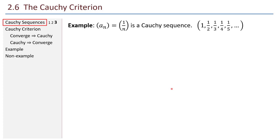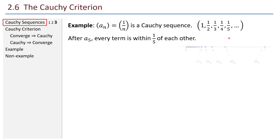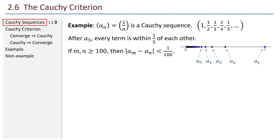Here's an example of a Cauchy sequence: simply the sequence 1 over n — 1, 1/2, 1/3, 1/4. A little bit later I will prove this is a Cauchy sequence, but I just want to give a sense of why. After the fifth term, every term is within 1 fifth of each other. If I'm looking at two terms beyond the 100th term, those are going to be within 1 hundredth of each other. So all the terms after the 100th term, if I take any two, they will be within 1 hundredth of each other.